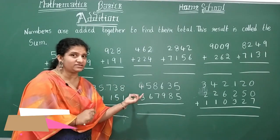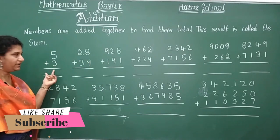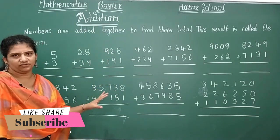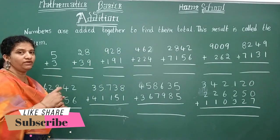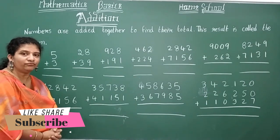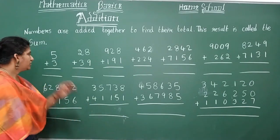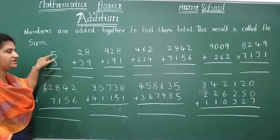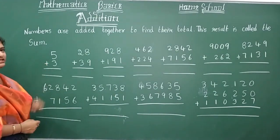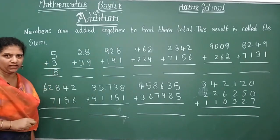Let's start. I have given single digit numbers, two digit, three digits, four digits, five digits, six digits. Every type of number — I am going to show you how to do addition. When we start addition, we have to begin from the units place onwards. Here we have only single digit — units place only. So five plus three: count three fingers — six, seven, eight. The sum is eight.